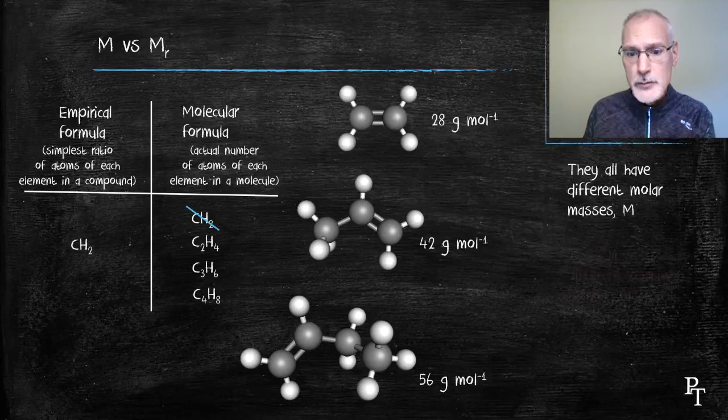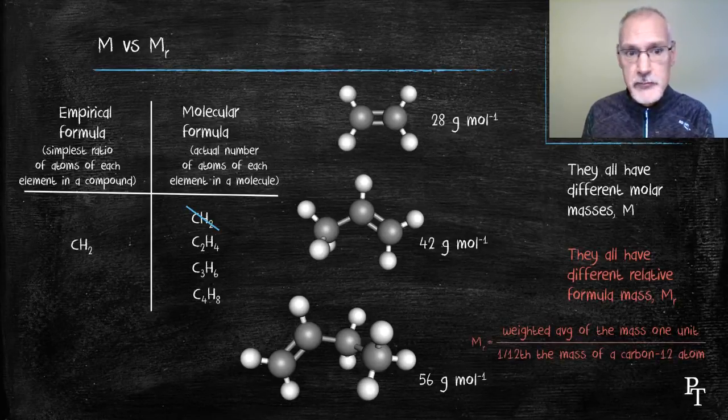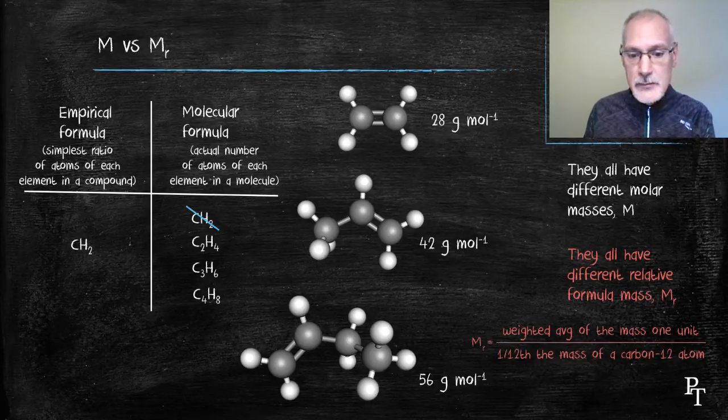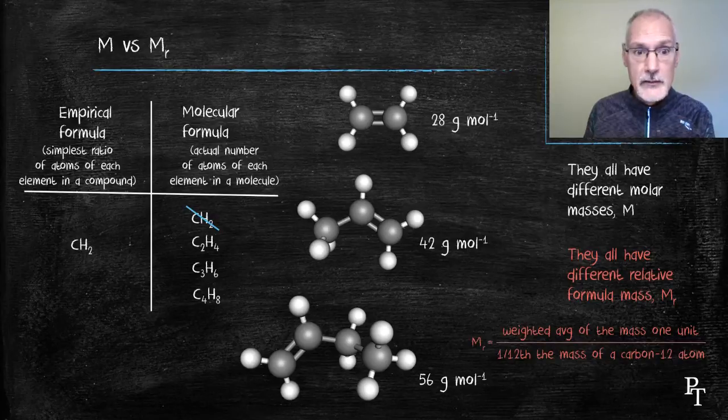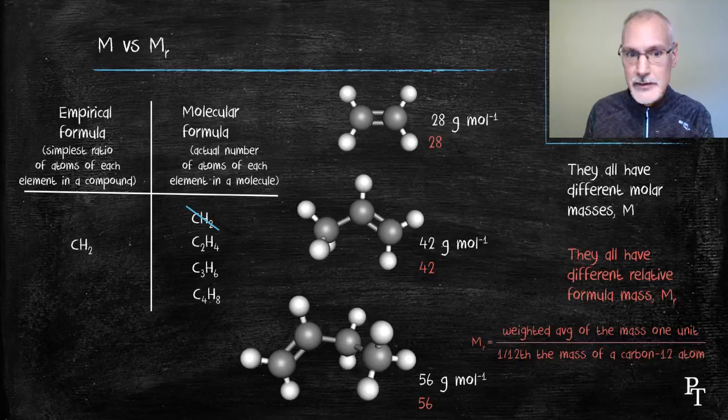They also would differ in another property, which we call relative formula mass. The relative formula mass is determined by taking one particular molecule of the substance and dividing it by one twelfth of the mass of carbon's most common isotope, which is the carbon-12 atom. This would give the following relative formula masses. Relative formula masses don't have units.